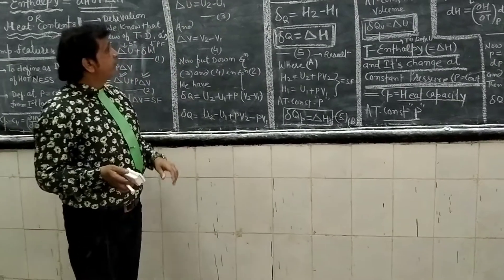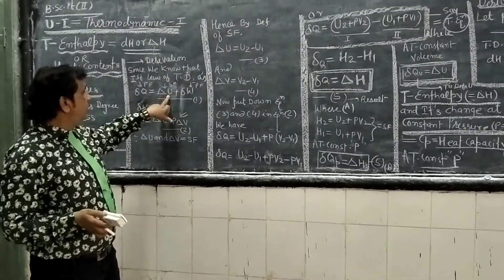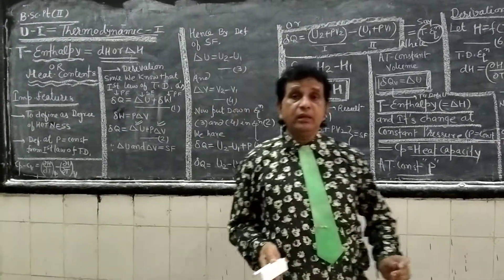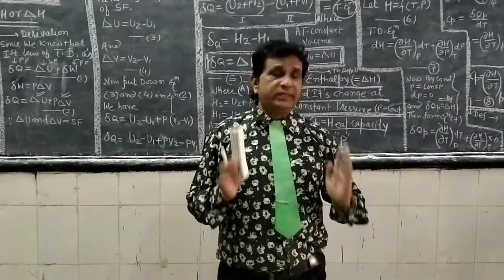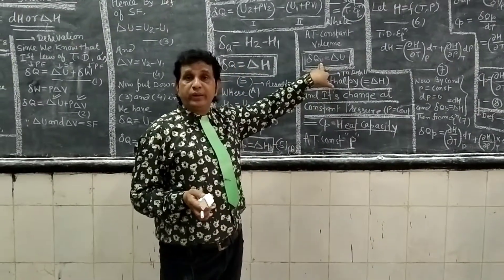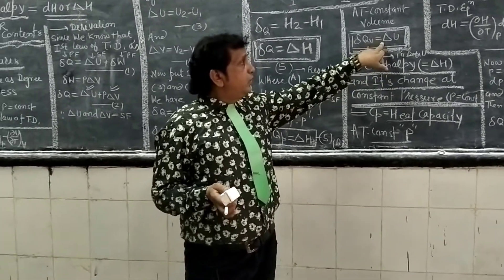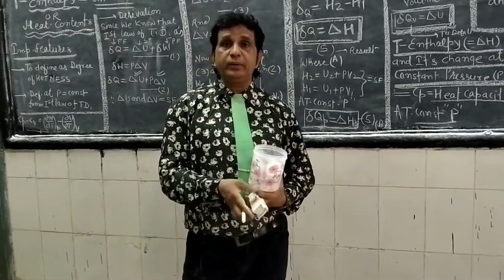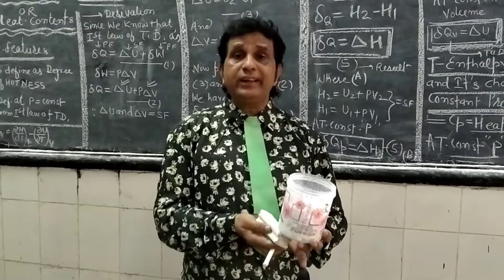Internal energy is symbolized by dU and is connected to the first law of thermodynamics: ΔQ = ΔU + ΔW. We also derived the value of internal energy at constant volume and the heat capacity at constant volume, Cv, which is the heat required to raise the temperature of the system at constant volume.